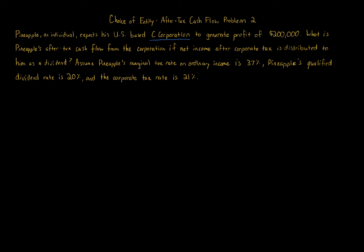This is a very important problem. We're told that we have a C corporation that Pineapple owns, there's profit generated of $200,000, and it's asking for the after-tax cash flow after considering a first-level tax at the entity level and a second-level tax if the net income after corporate tax is distributed to Pineapple as a dividend. The tax rate is 37% for Pineapple, with a 20% preferential rate on dividends, and the corporate tax rate is 21%.